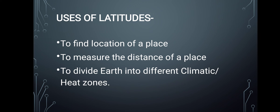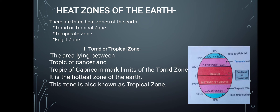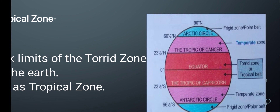Now let's discuss the important heat zones of the earth. Based on climatic conditions and heat content, the earth is divided into three heat zones. The first is the Torrid or Tropical Zone. It is the hottest zone because the sun's rays fall vertically here throughout the year — that's why it is the hottest zone of the earth.